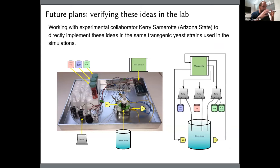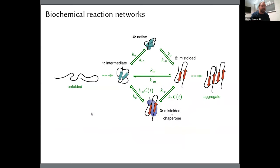Everything described so far focused on evolution, but these ideas are fairly general. Essentially any stochastic biological system is potentially amenable to these types of counterdiabatic control ideas. The second story will focus on the other scale: biochemical reaction networks. Here, rather than fitnesses, we're changing concentrations of chemical species, and those concentrations influence transition rates in some reaction network system — for example, chaperones binding to proteins.